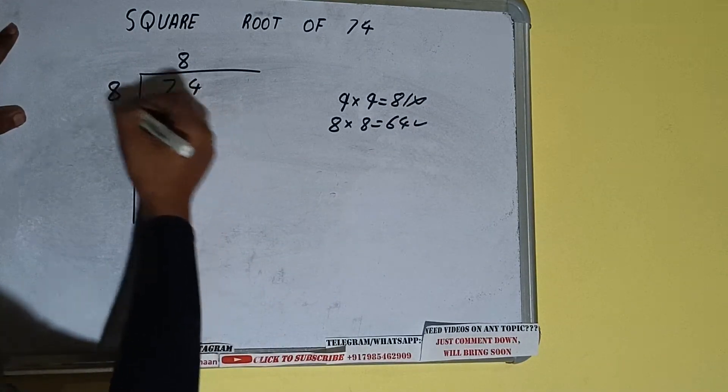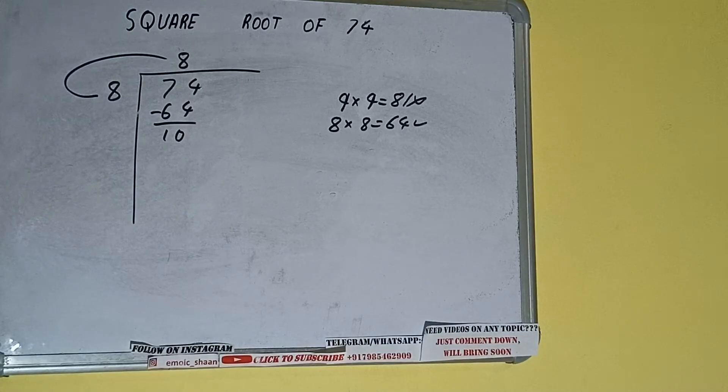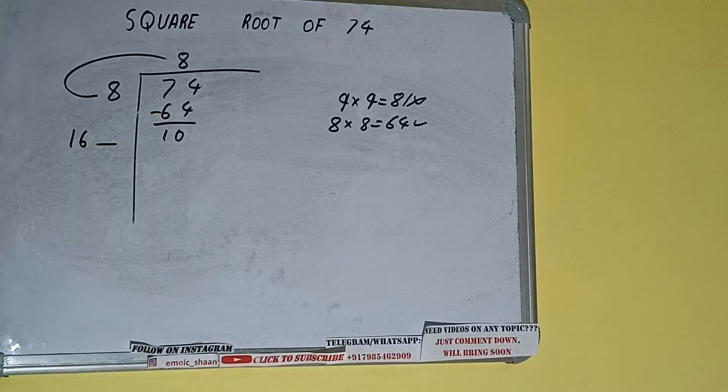So 8 here and 8 here, 64, subtract and we will be left. We did 8 into 8, so add both. So 8 plus 8 will be 16. Write it here and keep one digit extra.